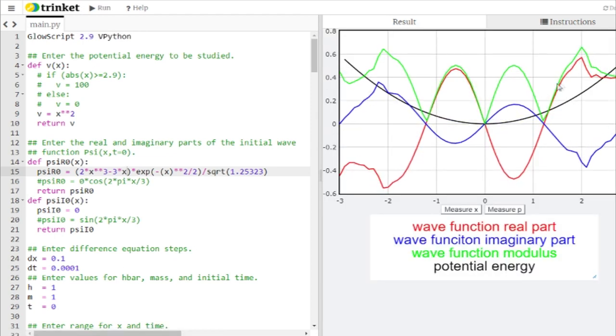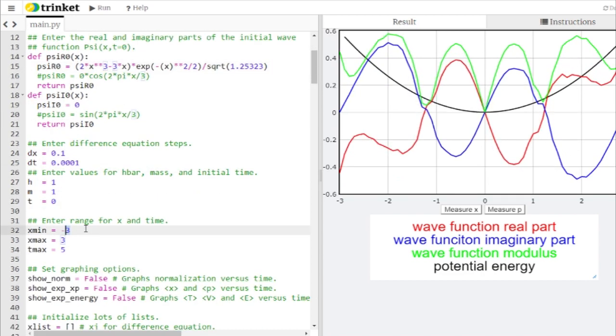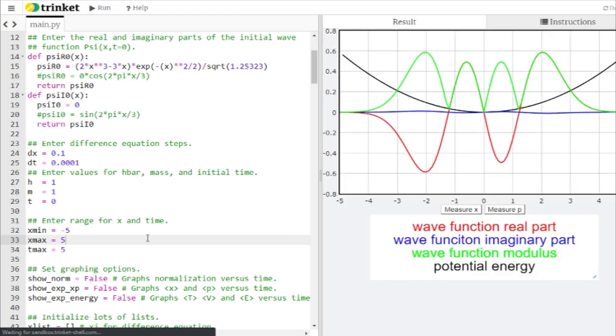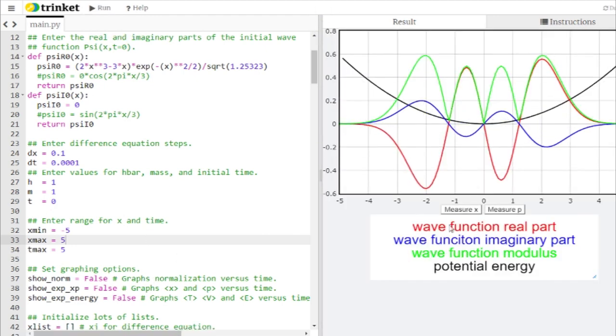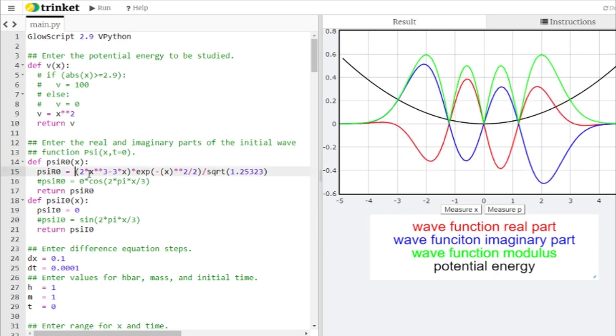I get a pretty stationary state. I've got some error coming in there. I might need to increase my x range here. Let's bump that out to negative 5 to 5. There we go. That's a little bit cleaner. I didn't quite have the full wave function captured there. Actually, let's just cut back to that. The next special combination is this 2x cubed minus 3x, again, times e to the negative x squared over 2.